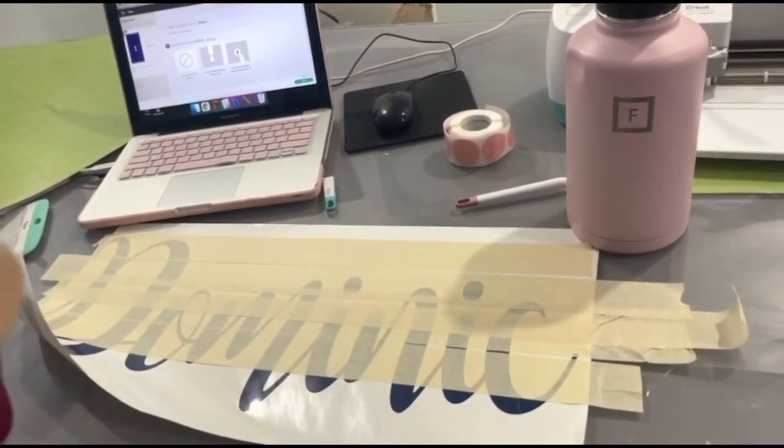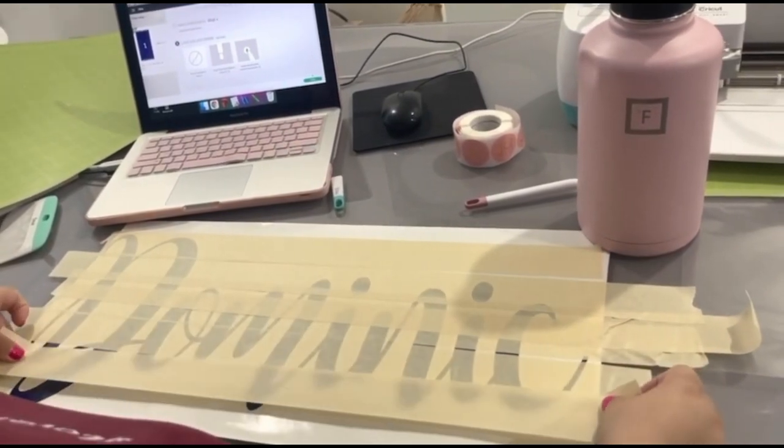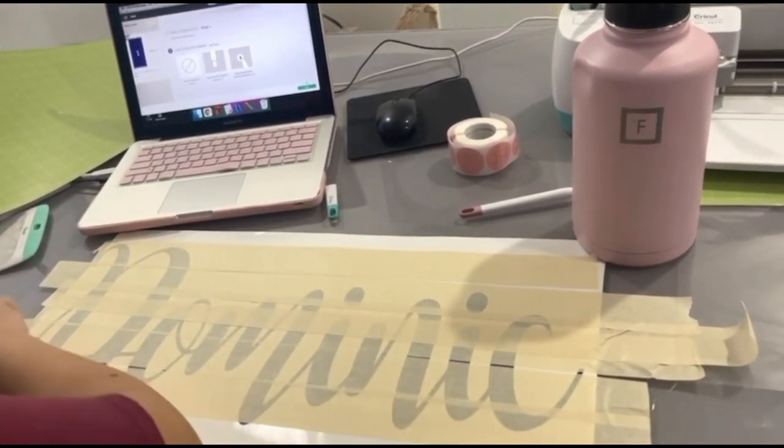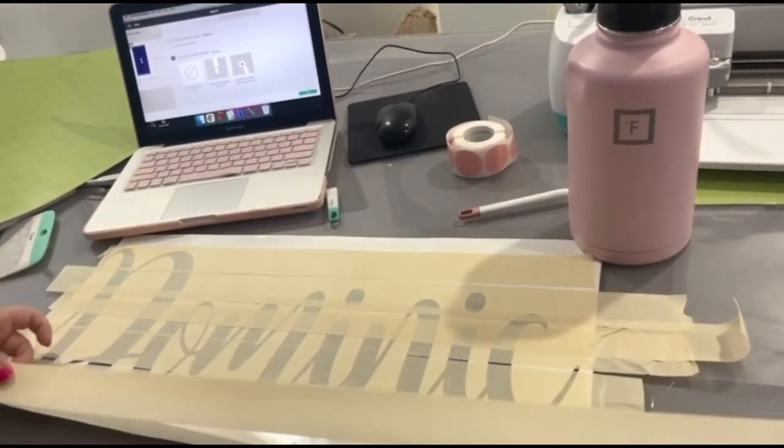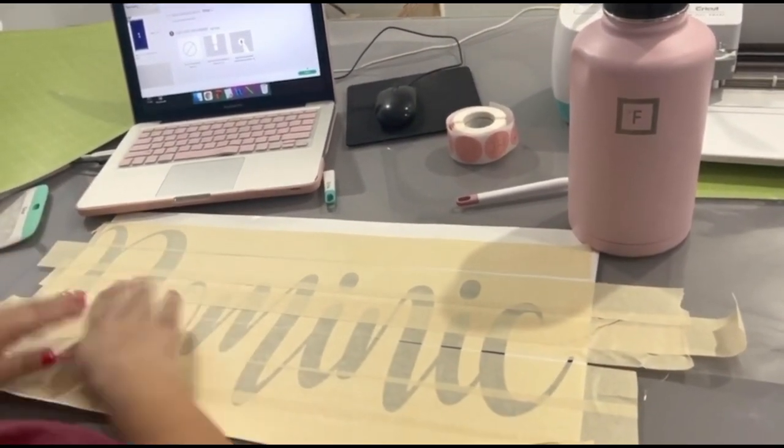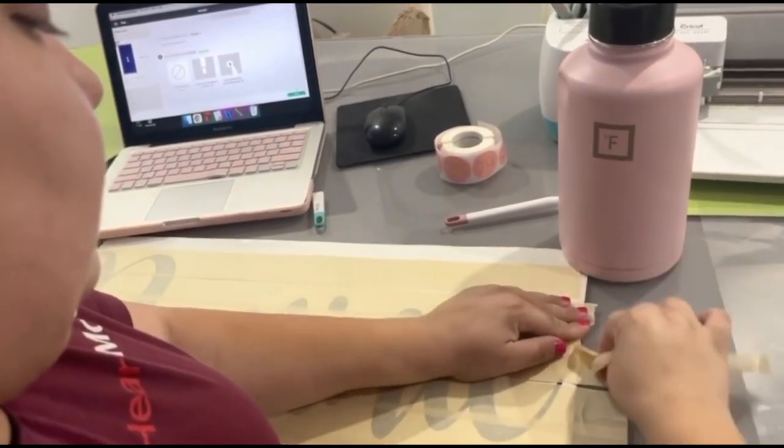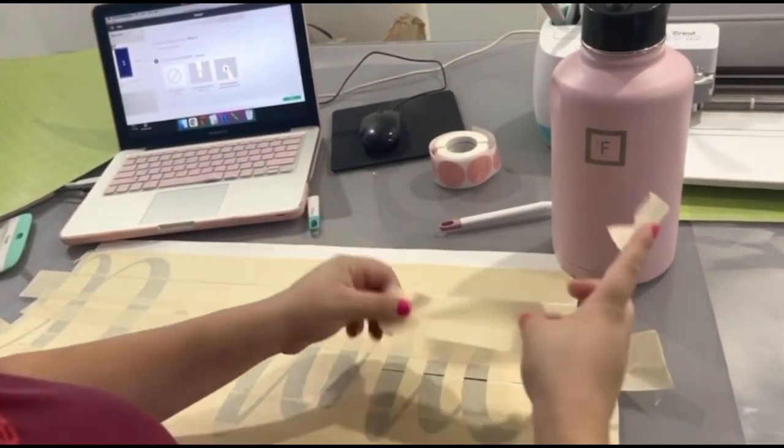It works perfectly for this type of project. I also like to use it when I'm transferring names onto balloons as well. The masking tape or painters tape works great. I'm just covering the entire design and then I'm going to cut off the excess on the sides. Then I'm going to transfer it onto the wooden platform I'm using.